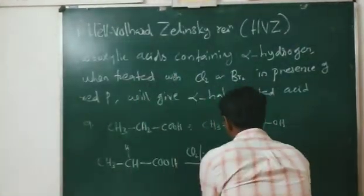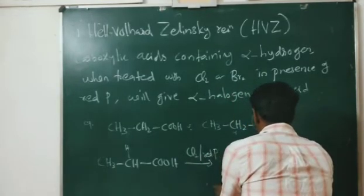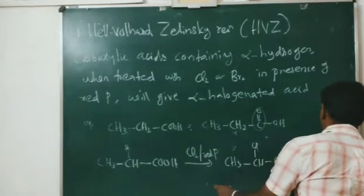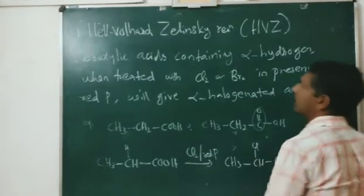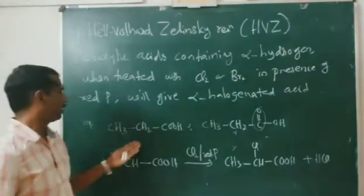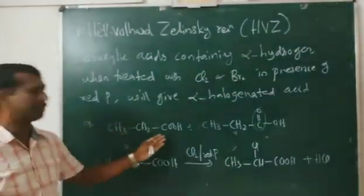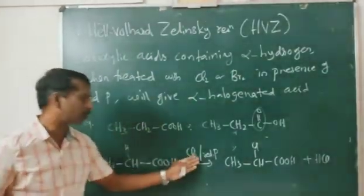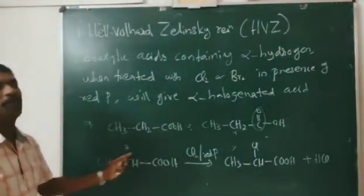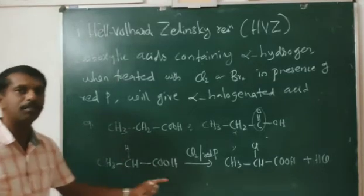We get the alpha-halogenated product plus HCl. This reaction is known as the Hell-Volhard-Zelinsky reaction. Keep in mind: carboxylic acids containing alpha hydrogen, when treated with chlorine or bromine in the presence of red phosphorus, one of the alpha hydrogen atoms will be replaced by the halogen.